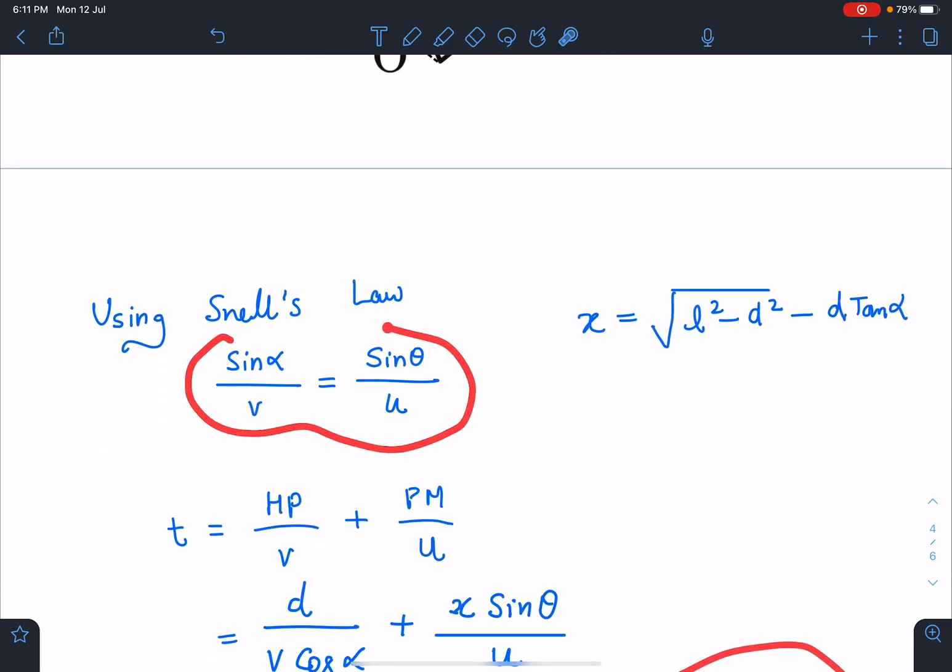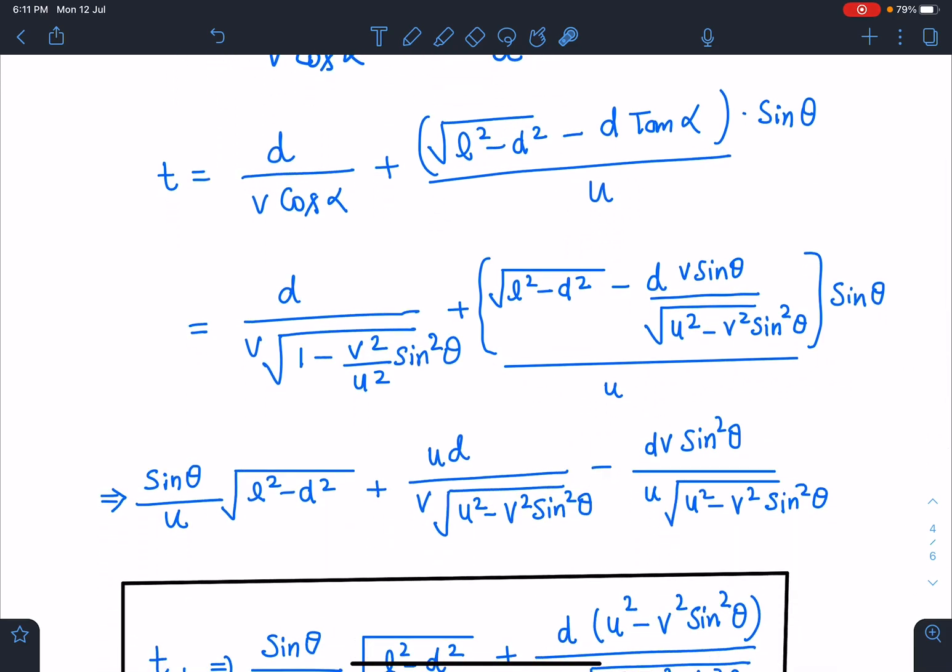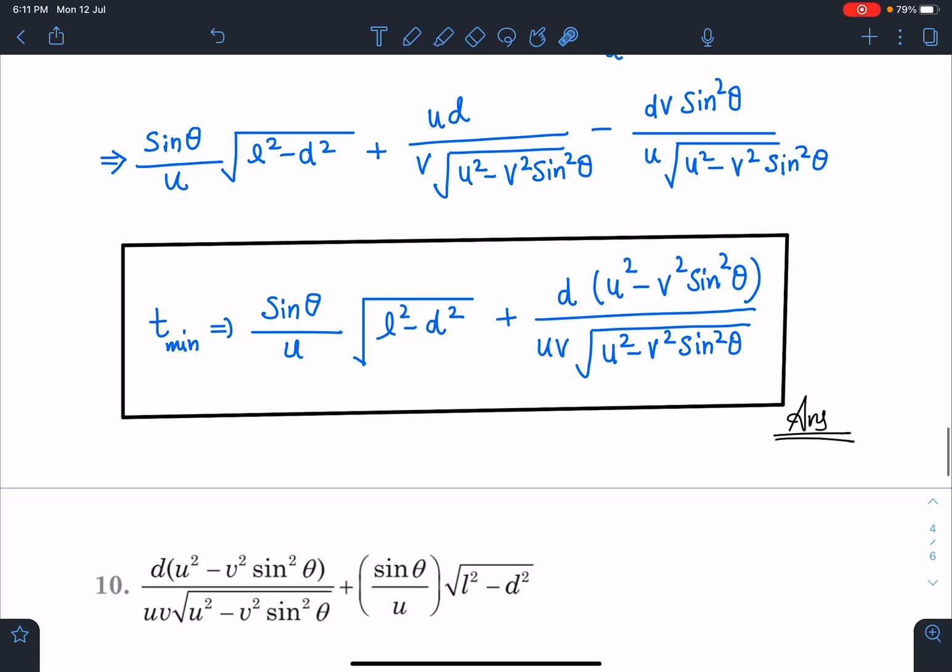So if I substitute that, cos α = √(1 - sin² α), and similarly tan α values - when I substitute and simplify, I am going to get this answer as t_min = (sin θ / u) × [√(l² - d²) + d(u² - v² sin² θ) / (uv√(u² - v² sin² θ))]. This is the answer for this question, which matches with the answer given in the book.